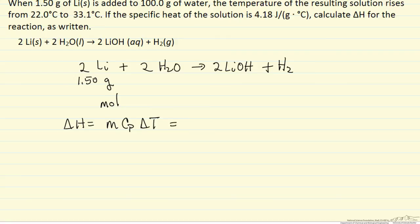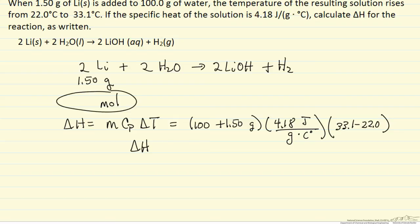So we have 100 grams of water. We add 1.5 grams so that's the total mass. It tells us the heat capacity of the solution in joules per gram centigrade. The temperature change is 33.1 minus 22.0. So we can get delta H for the number of moles which we need to determine.